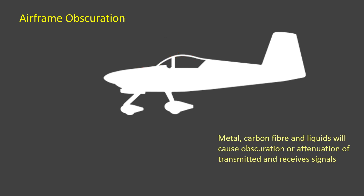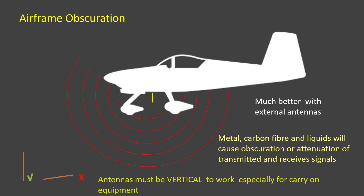It may be obvious that a better solution in a metal or carbon aeroplane is to install external antennas — and so it is. However, please remember that all electronic conspicuity antennas must be vertically polarized to work properly; positioning them horizontally will just not work. In the UK, all permit aircraft on the BMAA or the LAA register are permitted to install external antennas. We're also working closely with the European regulator so that this can soon be done on EASA registered aircraft as well.